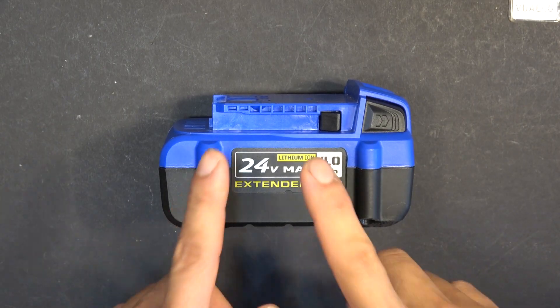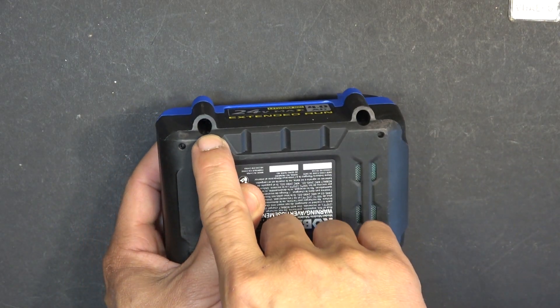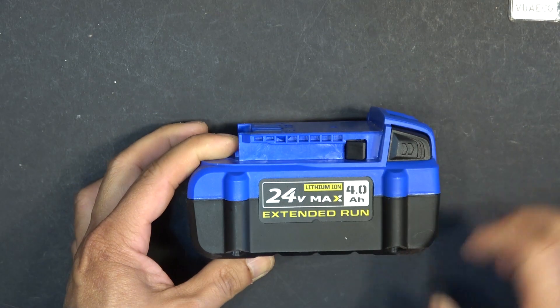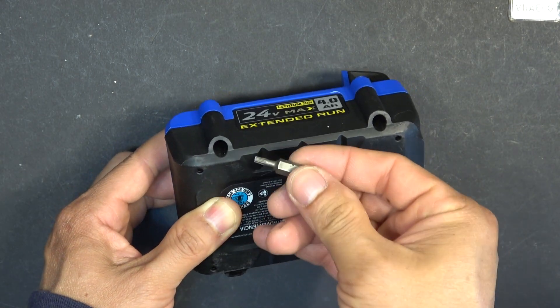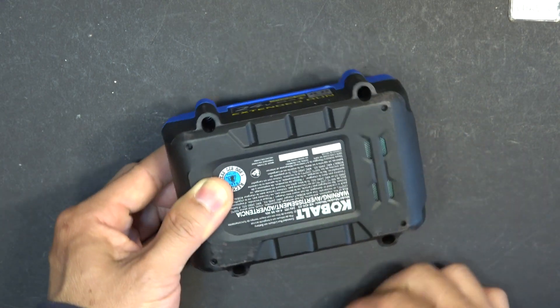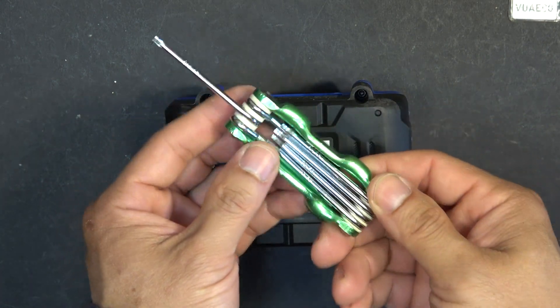So first thing I'm going to do is remove the case. This case has security torque screws and I got a bit here, but this is a long reach so this is not going to work. So I have this here bought from Harbor Freight for about $3, very cheap.